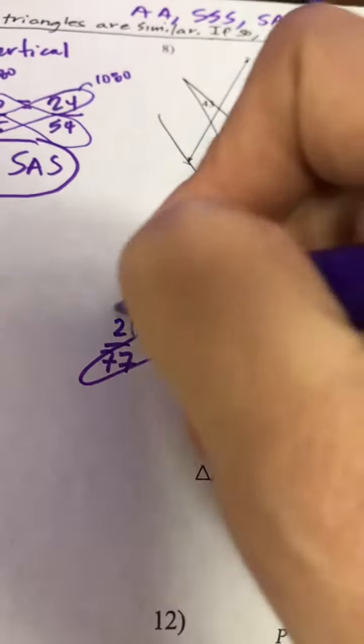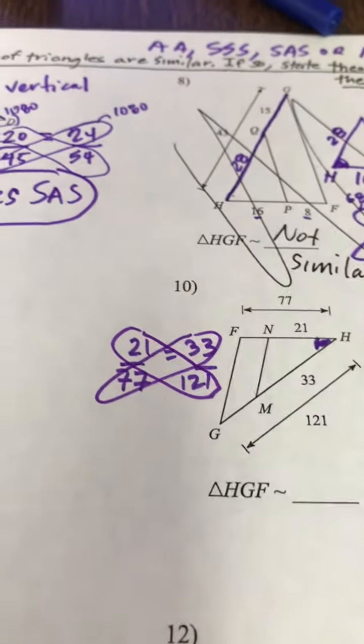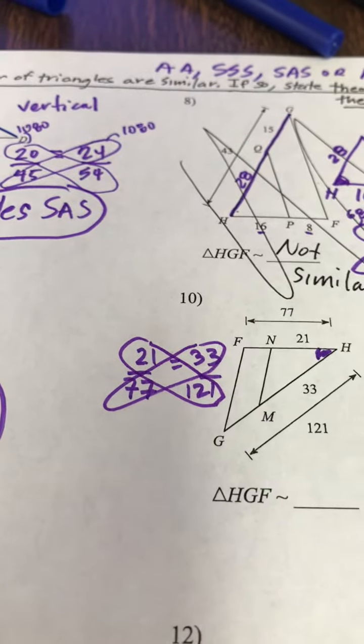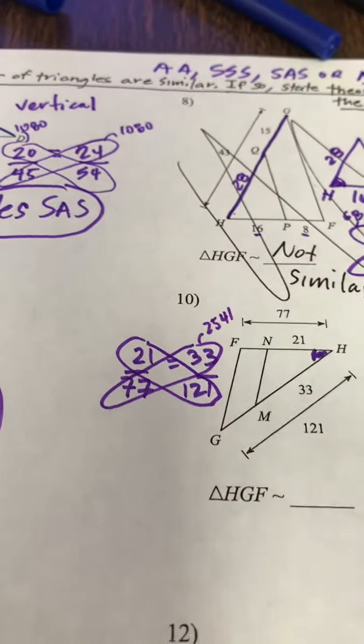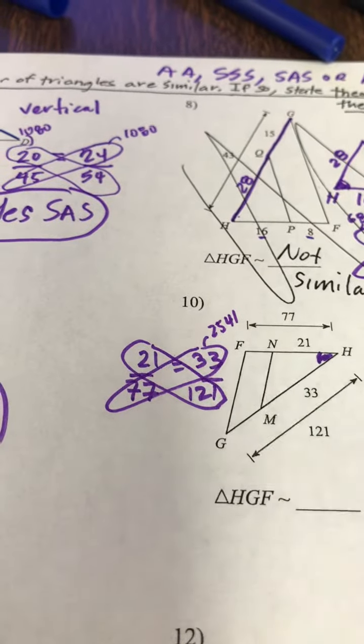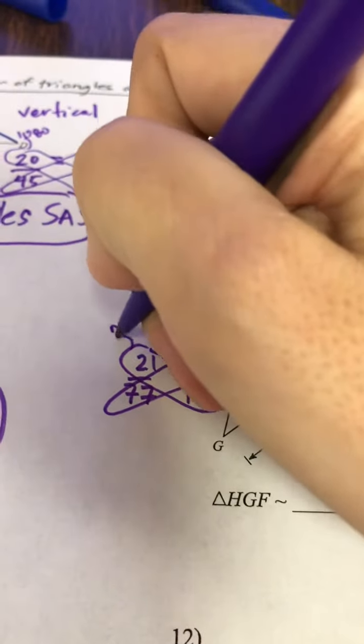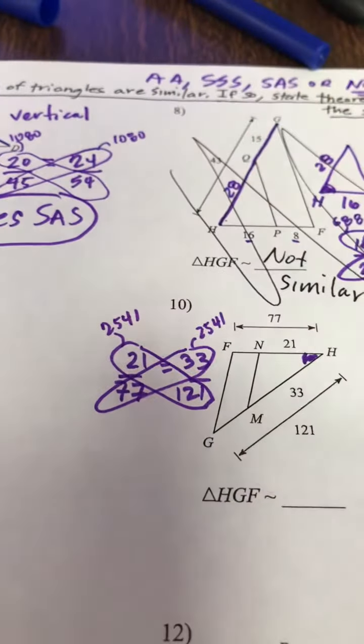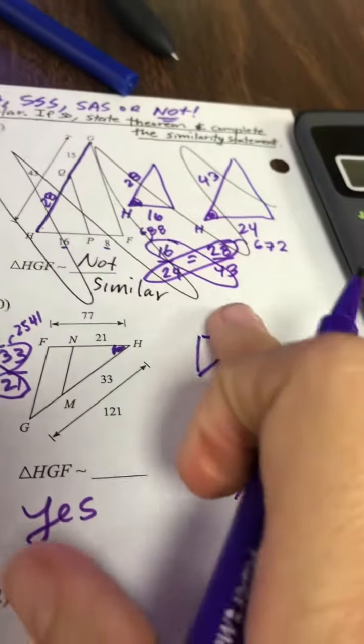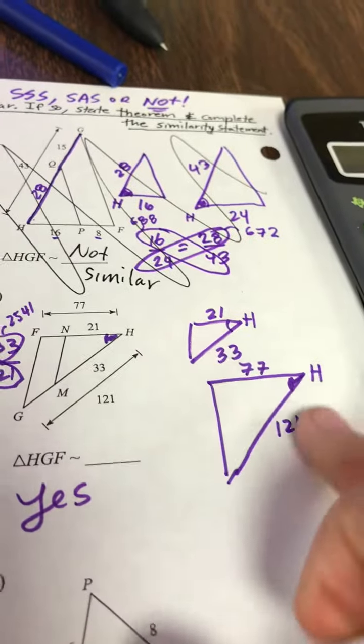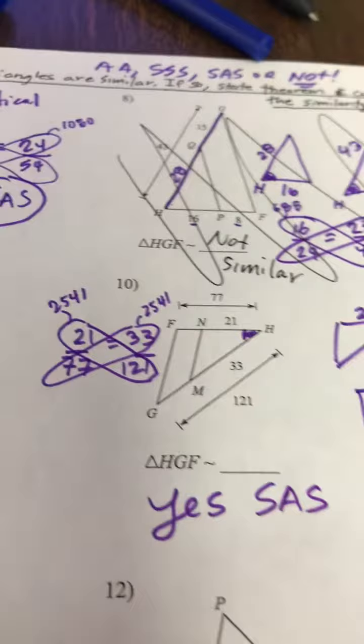Cross multiply to confirm that they have the same cross product, which tells me that indeed they are the same ratio. So I get 2541. So I get 2541, 2541. So I'm going to say yes because of SAS. Side, angle, side. Side, angle, side.